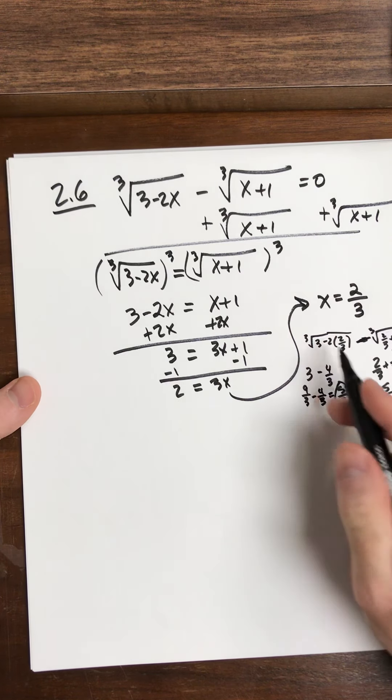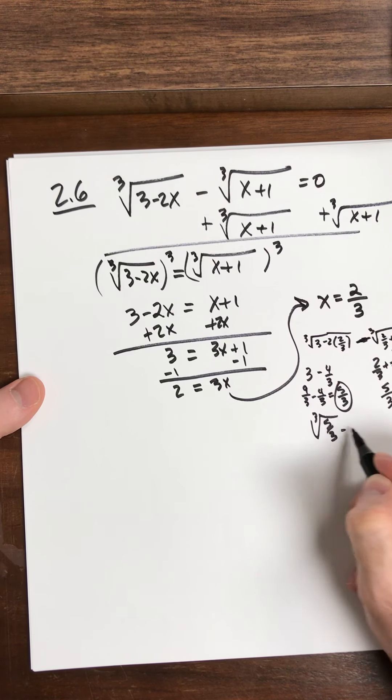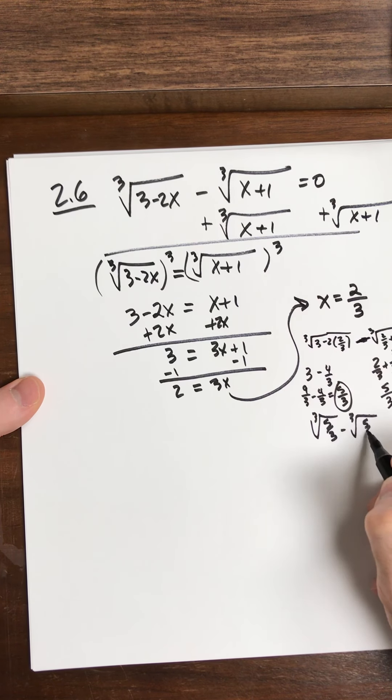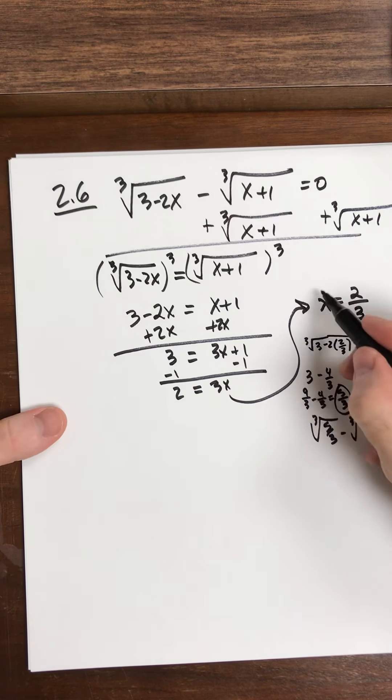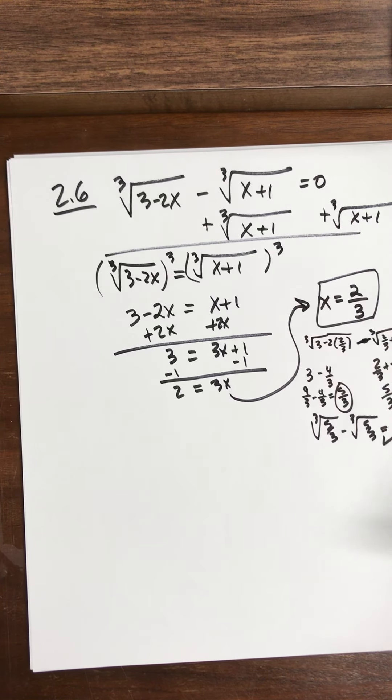So here's what's happening. I'm doing the cube root of 5 thirds minus the cube root of 5 thirds. Yeah, I think that's 0, so that's going to work for us. So this is a solution.